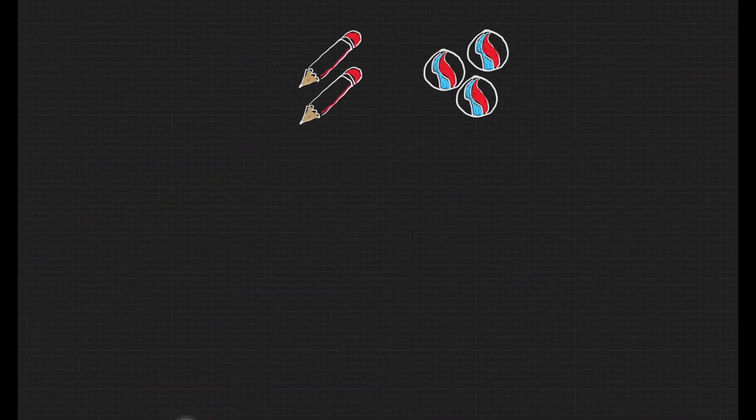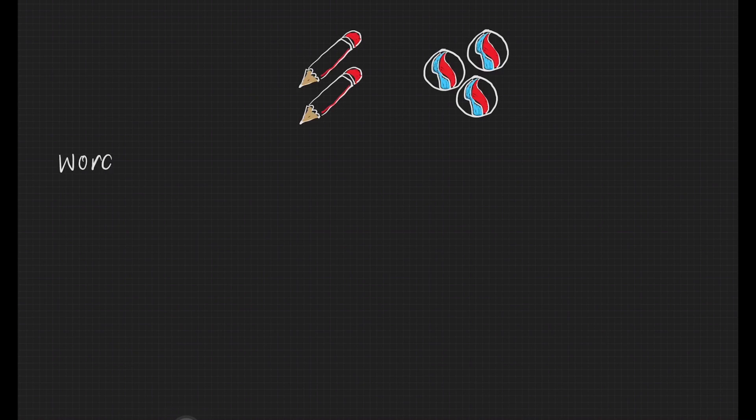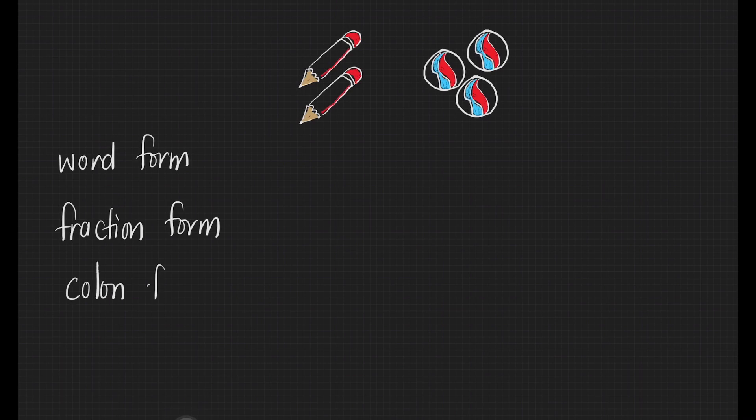Ratios can be written in three different ways. The first one is the word form, second is the fraction form, and the last is the colon form.